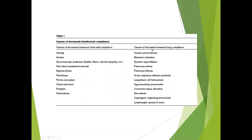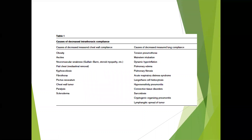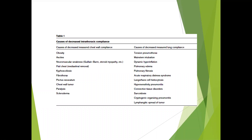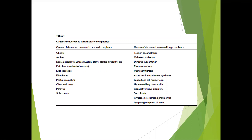Lung causes of decreased compliance include tension pneumothorax — where air accumulation raises pleural pressure and collapses lungs — main stem intubation ventilating only one lung unit, hyperinflation, pulmonary edema, pulmonary fibrosis where stiff tissue requires more pressure to distend, and ARDS. In ARDS, generating even a minimum tidal volume requires high pressure because the lungs are not compliant.